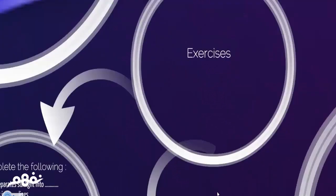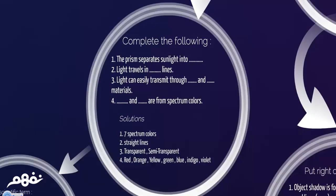Let's solve some exercises. Complete the following. The prism separates sunlight into seven spectrum colors, as we just said before. Light travels in straight lines. Number three, light can easily transmit through transparent and semi-transparent materials. Number four, red, orange, yellow, green, blue, indigo, and violet are all called spectrum colors.